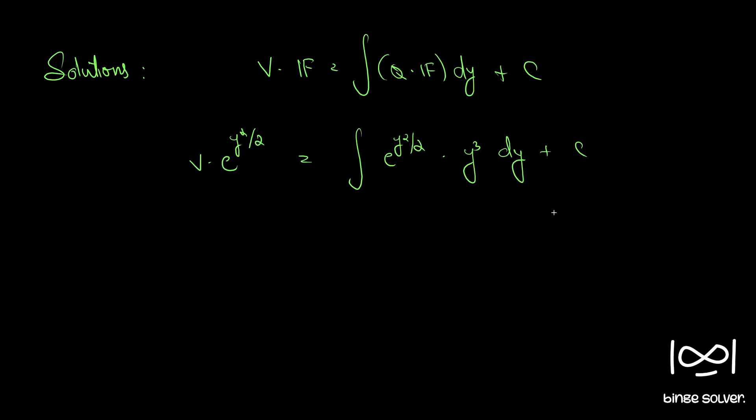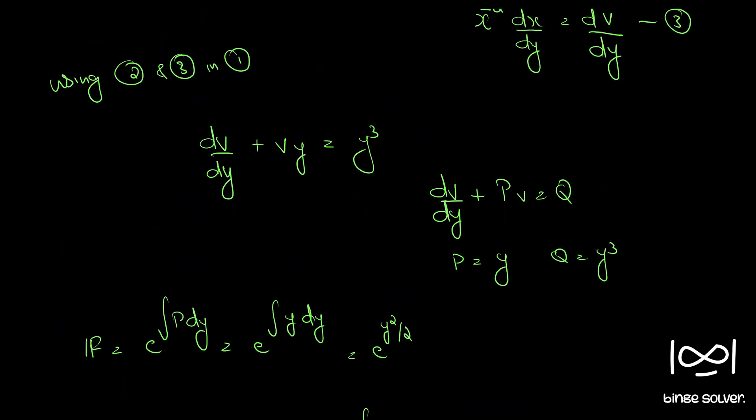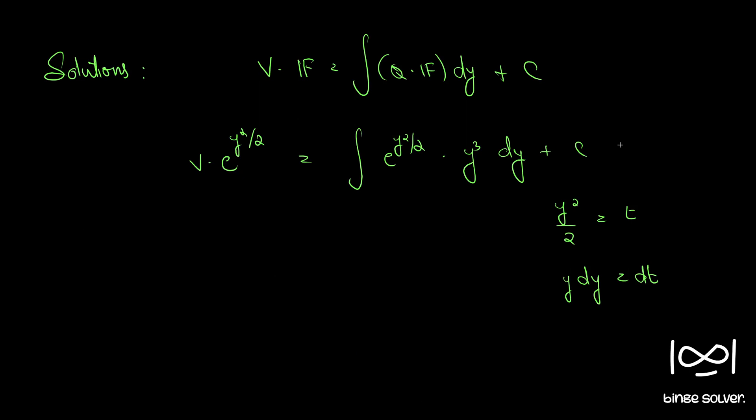Here let's put y square by 2 equal to t. So we have y dy equal to dt. Call these equations 4 and 5.